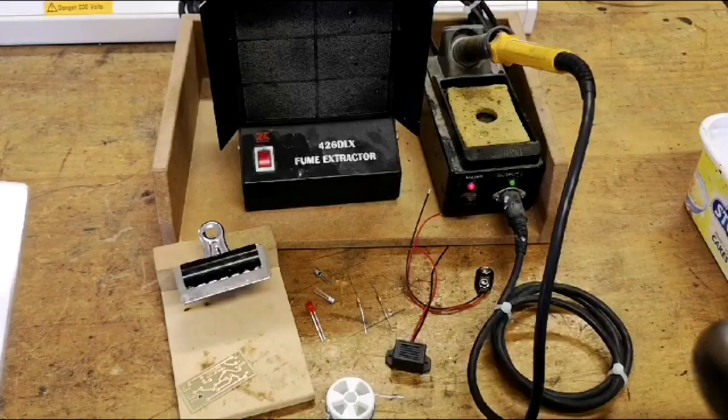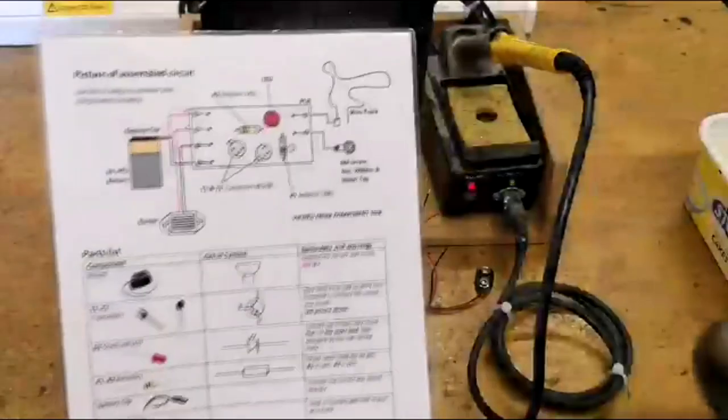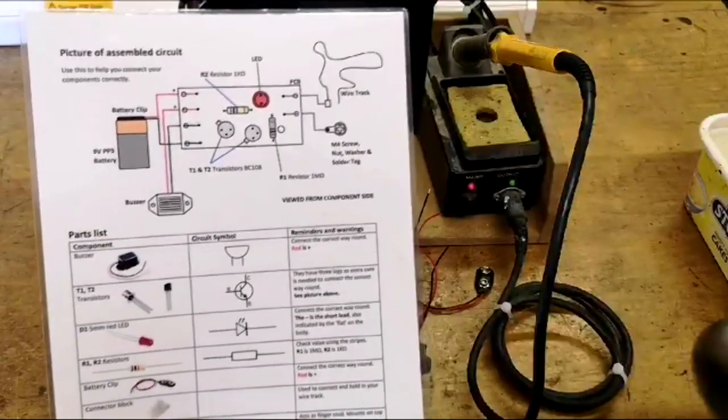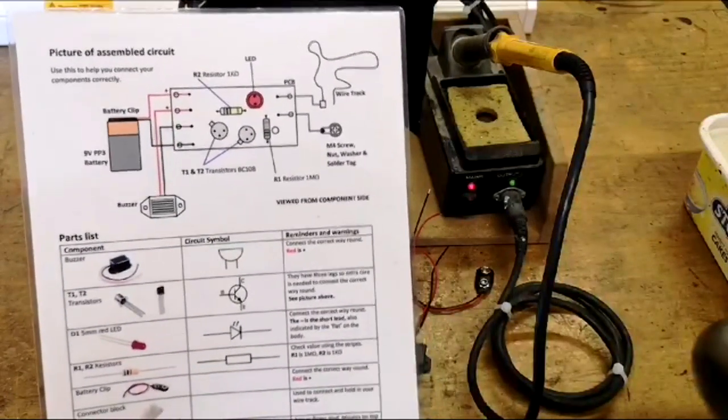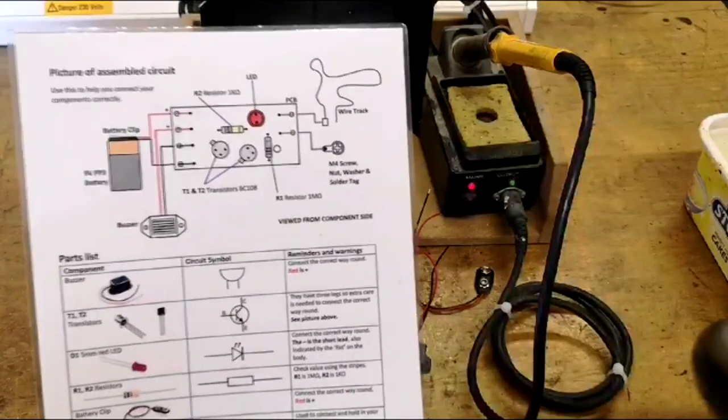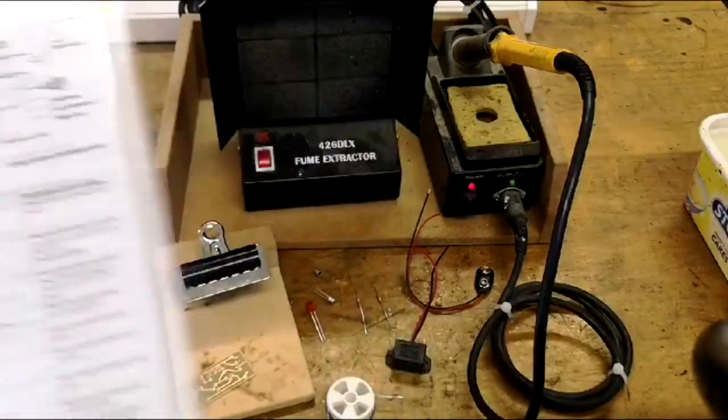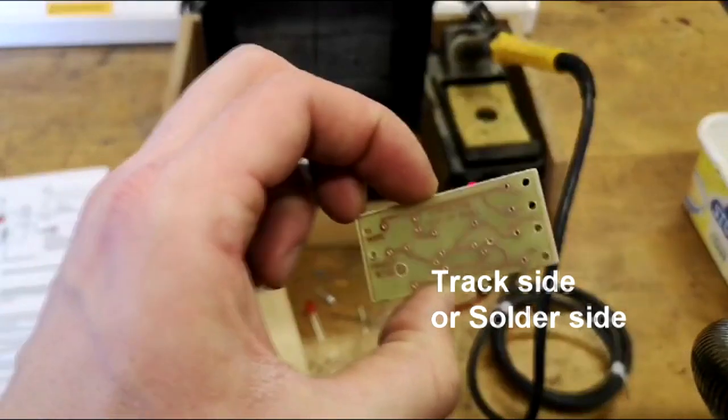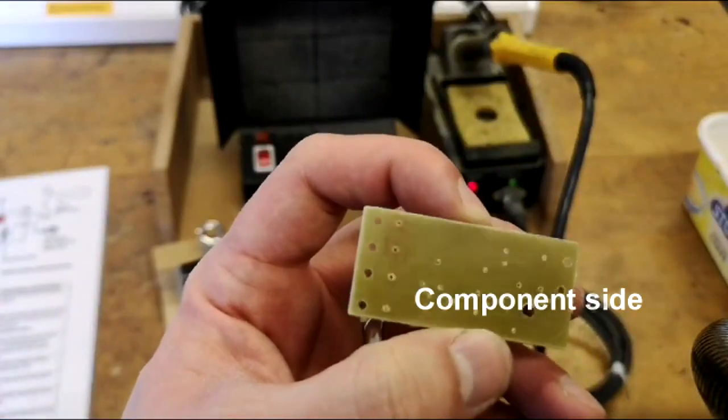In order to solder your components in place properly, you are going to need to follow the diagram that you've been given as part of your booklet. This explains clearly where each component should be placed. Bear in mind that the view you are looking at is the opposite side of the circuit to the one we've been seeing so far. So this is the track side; this is the side you need to look at when placing your components.